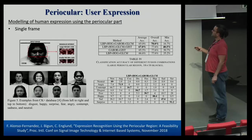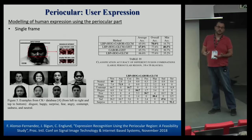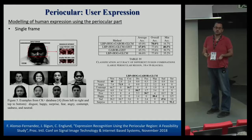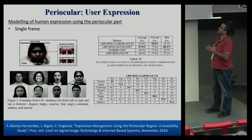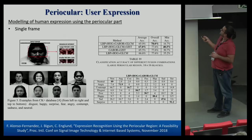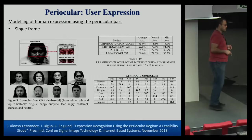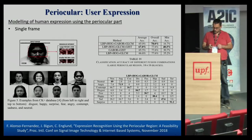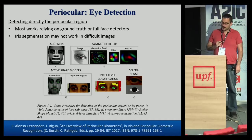We also tried to estimate facial expression using only periocular region images, using a database traditionally used in face expression analysis. This study is being presented at a conference next week. With the whole face and video, existing studies reach around 97–98 percent accuracy. Using just a single frame of the periocular region, we achieve around 70 percent overall, but for high-energy expressions like surprise or disgust the results reach 88–91 percent, which is quite good.